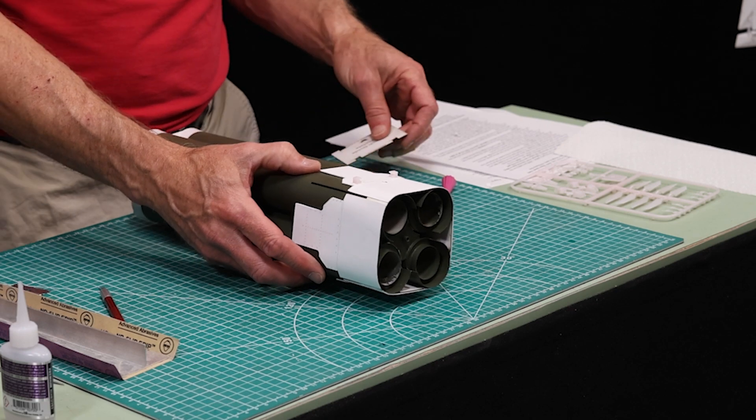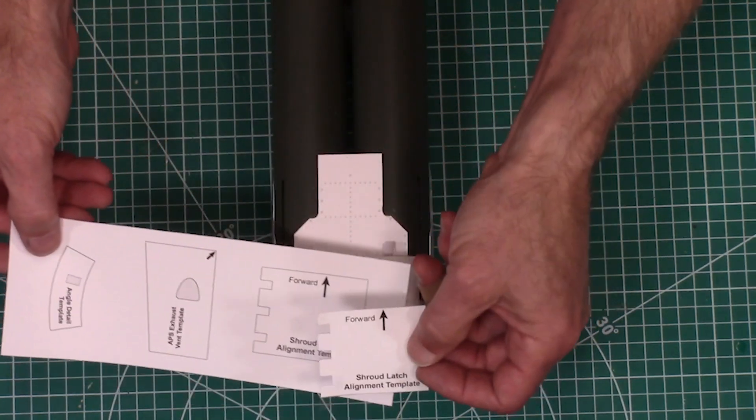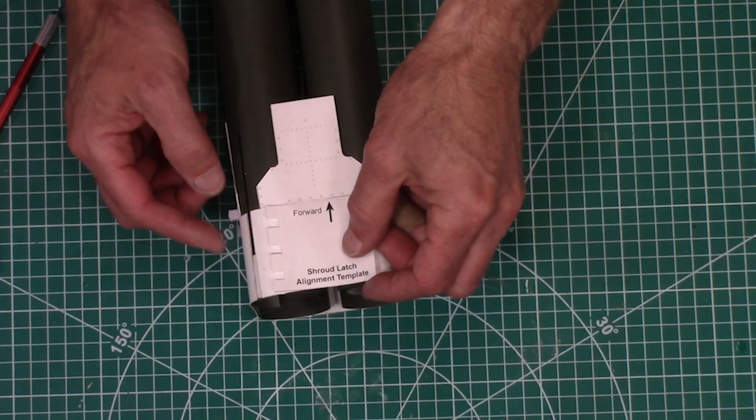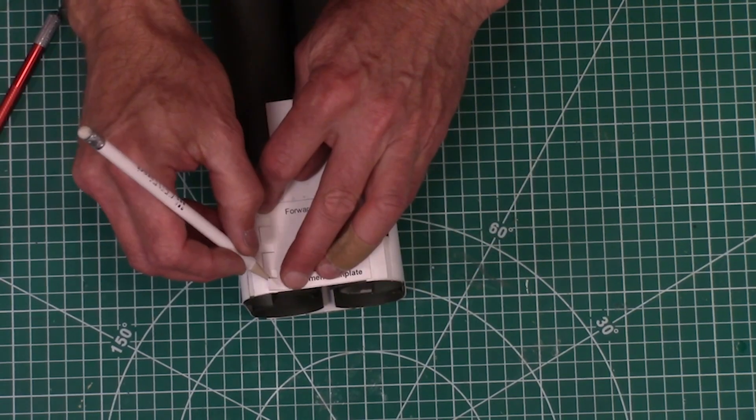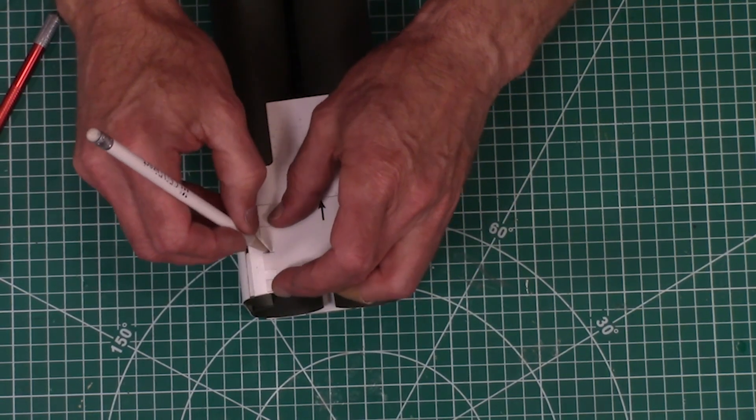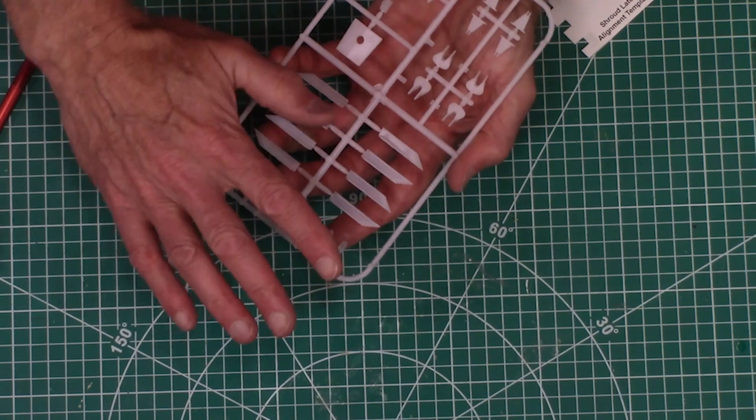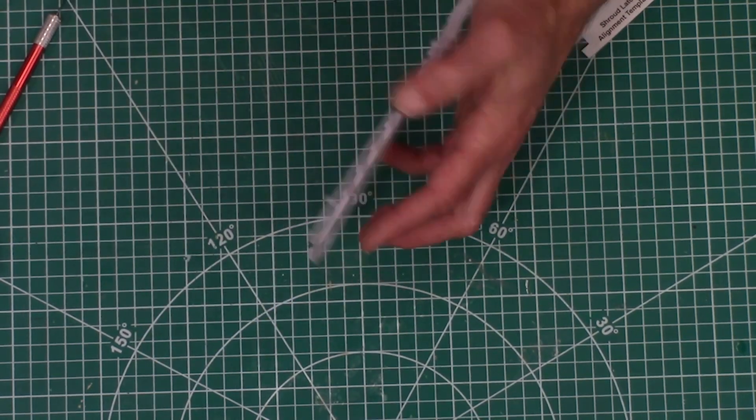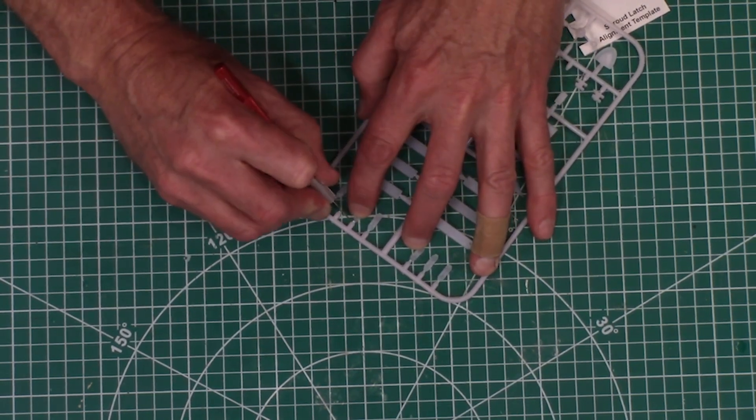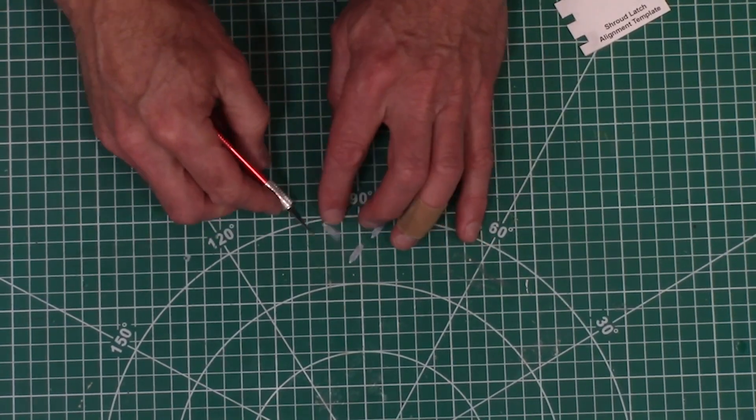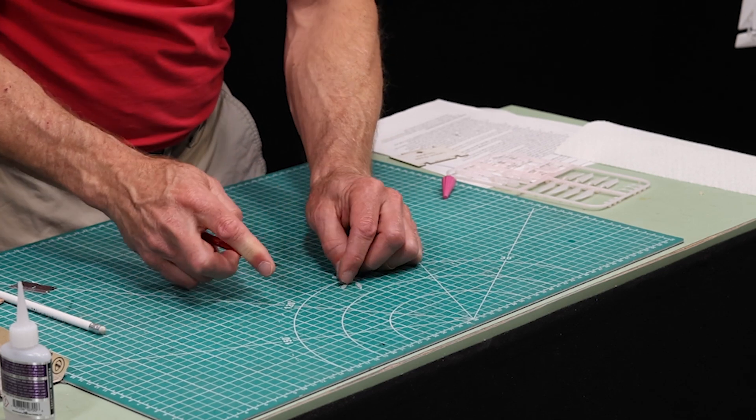And now in step 62, we're going to take the latch and there's a latch template on one of the paper sheets. And I've already cut it out. And I'm going to put it on the one clockwise from the rail guides that we just put on. So we're going to center this right there. This area is where we're going to glue those latches. Now the latches, they're on the sprue. And they're these things right here. And they're slightly curved. And that's to go around the curvature of the body tubes.